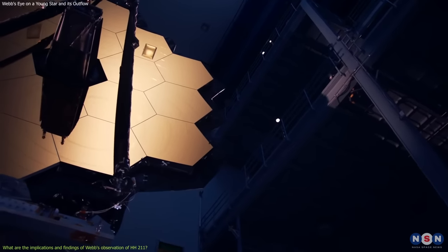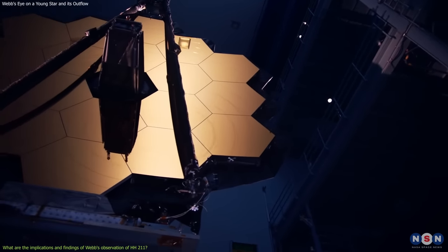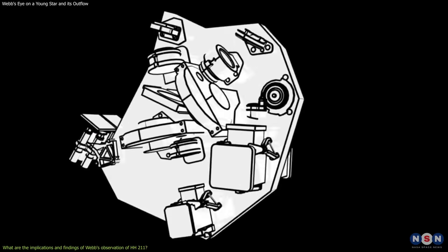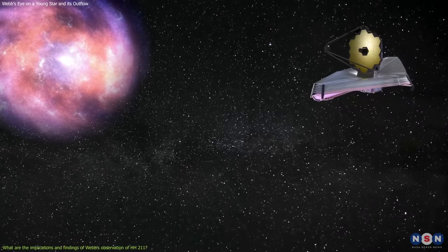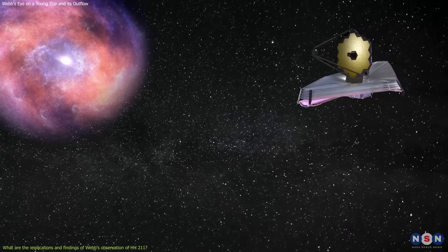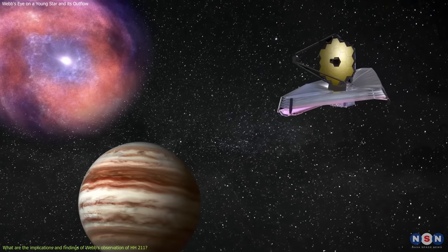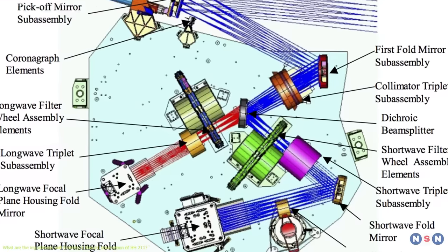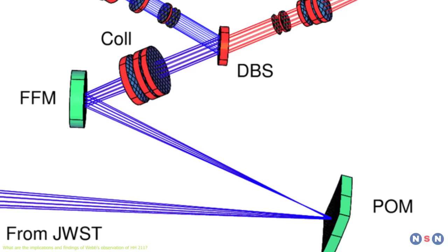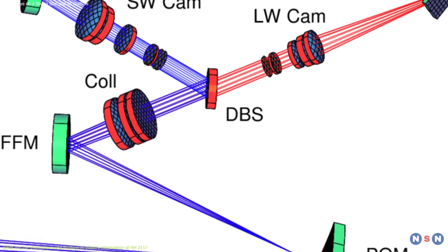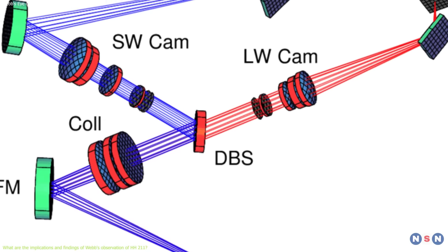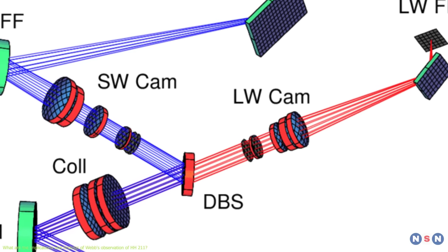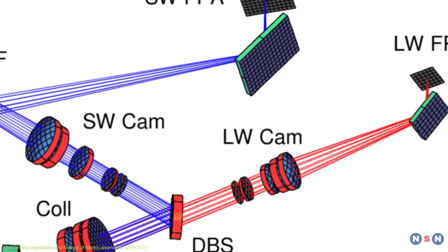Webb also used one of its four scientific instruments to take this image, the Near Infrared Camera, or NIRCam for short. It is designed to capture sharp images of distant galaxies, stars, planets, and other objects in infrared light. NIRCam has two modules, one for shorter wavelengths, 0.6 to 2.3 micrometers, and one for longer wavelengths, 2.4 to 5 micrometers.